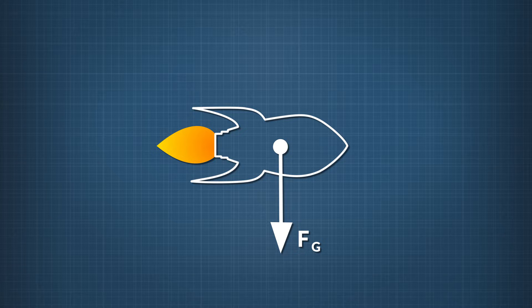The thrust from the rocket engine is pushing the rocket forward, so we draw a forward-facing arrow and label it F sub thrust. Are there any other forces involved?